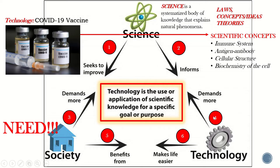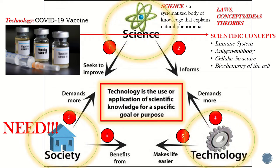You can see the interaction of the three main terms: science provides the concepts behind the COVID-19 vaccine, the vaccine is the technology, and it is highly needed by society especially in 2020. Society benefits from technology and technology makes life easier because it provides conveniences.